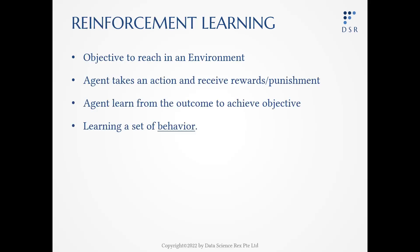For reinforcement learning, you need to have an environment and an objective you'd like to reach. The machine agent will take an action and receive feedback, whether it is reward or punishment. The agent will then, from the outcome of each action, learn a set of behavior.